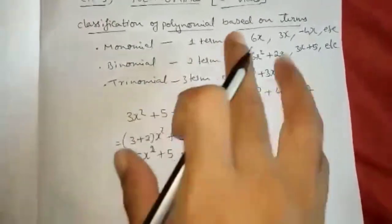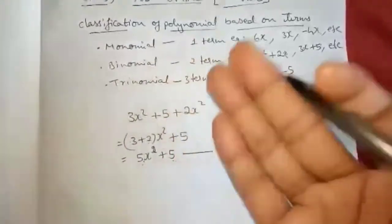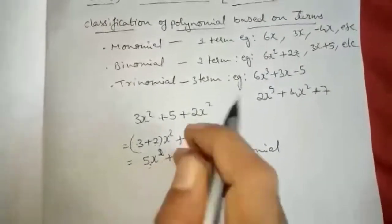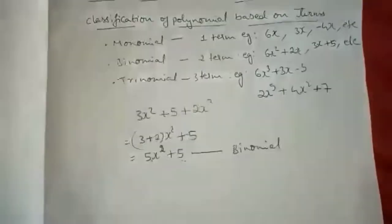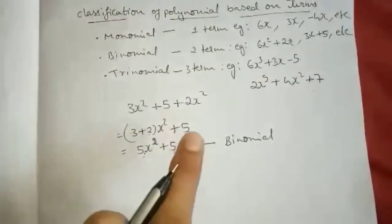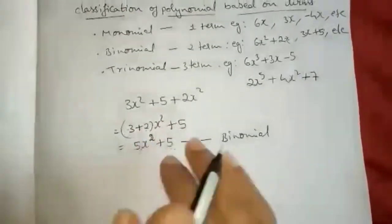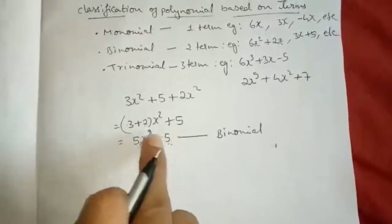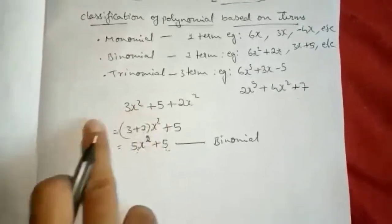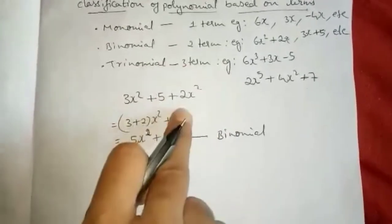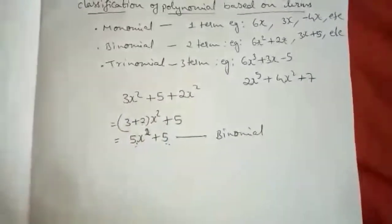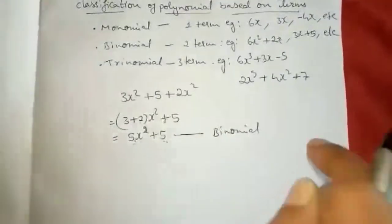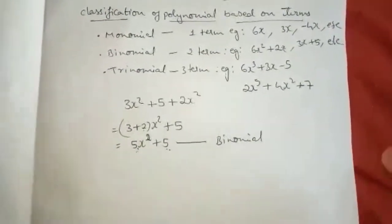So whenever you are testing which classification it is — monomial, binomial, trinomial — you have to see whether it is in its simplest form. We cannot simplify further after this, because these terms are unlike. You have to see if they have given any polynomial, whether we can further simplify it. If it is in the last simplified form, then you check monomial, binomial, or trinomial.